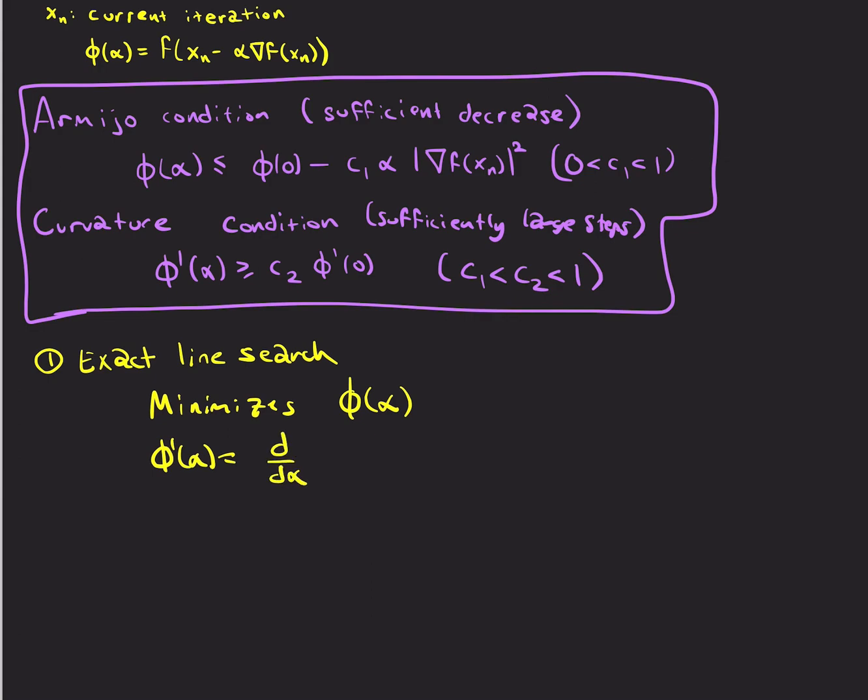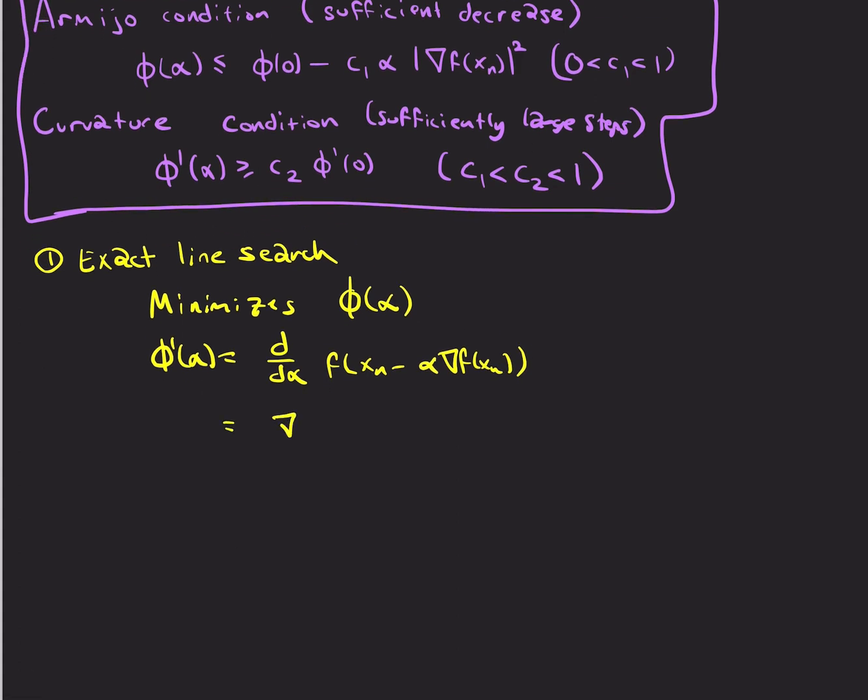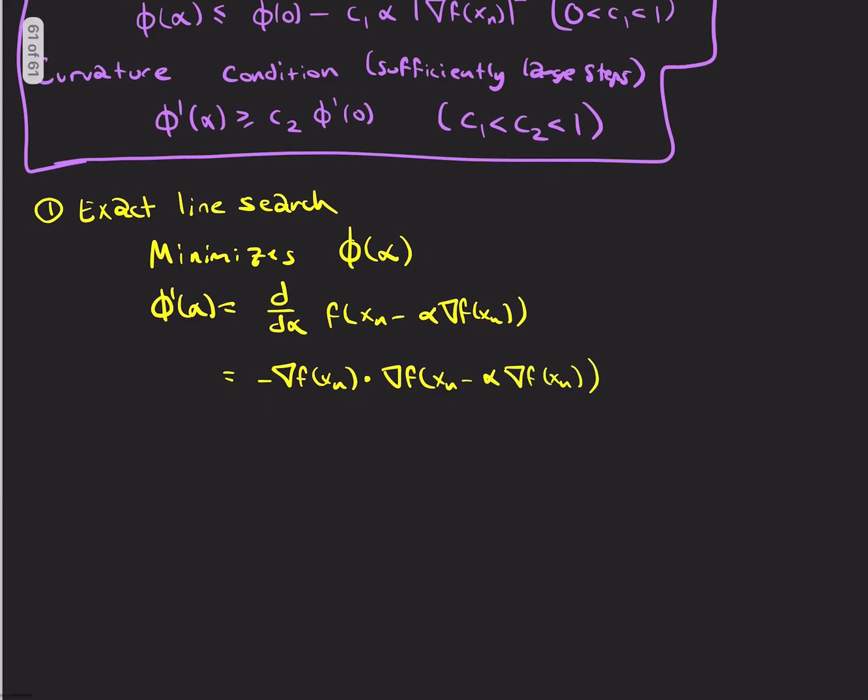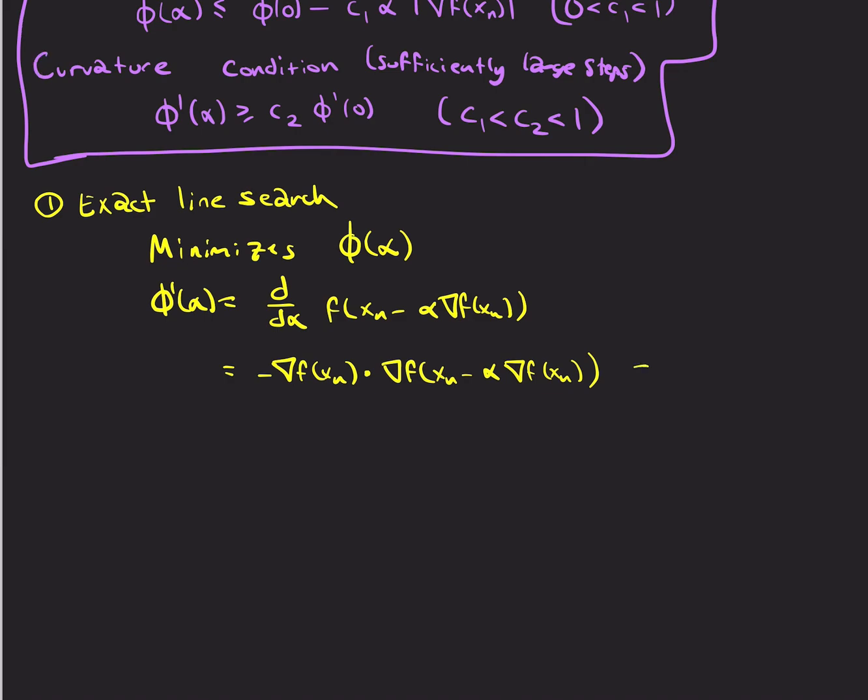So let's compute what this gradient is. So this is d/dα of f(x_n - α∇f(x_n)). And so the chain rule is going to give you that this is, the gradient is minus the gradient dotted with the gradient at f(x_n - α∇f(x_n)). And where is that equal to 0? And that is the question. So you solve that.